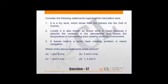Harmattan, one of the few local winds which one must study for exam. It is a dry wind which blows from Sahara into Gulf of Guinea - absolutely correct. Locally known as Doctor Wind in Egypt because it absorbs moisture in atmosphere and lowers temperature of surrounding area creating soothing environment - of course it is dry wind, and in humid area when it blows, it brings down humidity and temperature. It leaves behind dusty haze creating a problem - yes, that's a problem with it. D option stands correct because all three are correct.